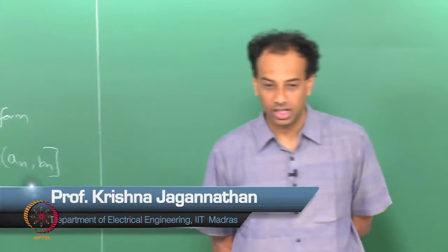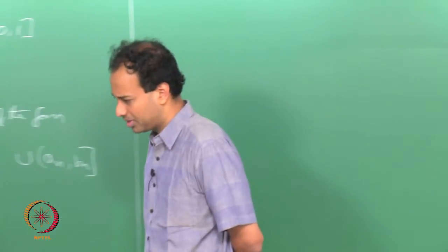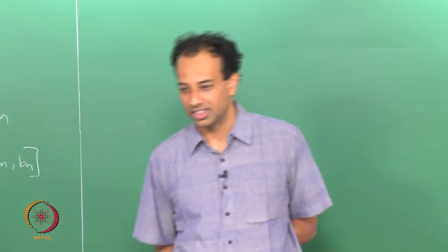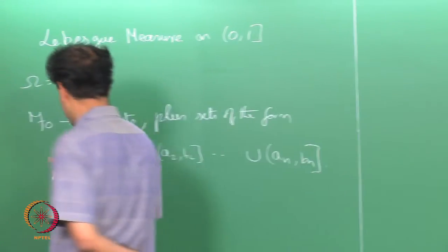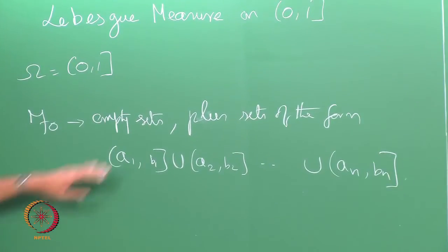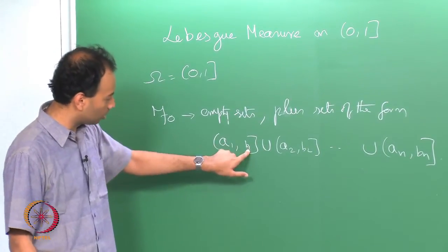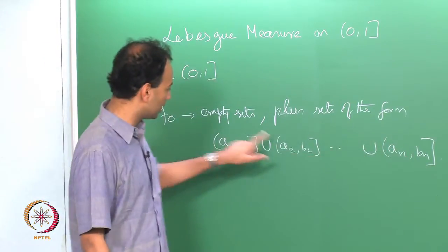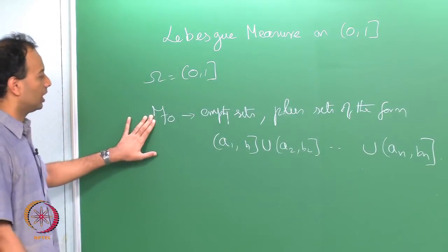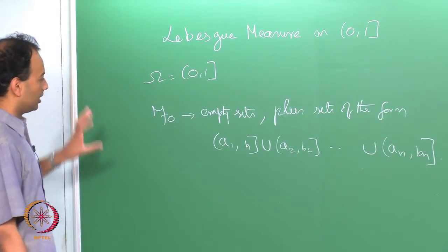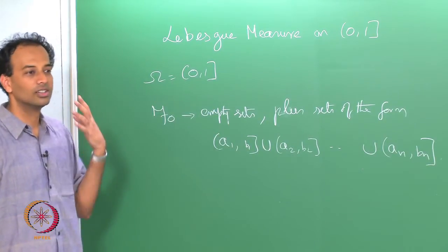Last class we were discussing the Borel sigma algebra on [0,1] and building towards defining the Lebesgue measure or uniform measure on [0,1]. The Lebesgue measure tries to formalize the notion of length. We took this collection F_naught of subsets of [0,1] which includes the empty set and sets of the form (a_1, b_1] — finite unions of disjoint such sets. F_naught is an algebra but not a sigma algebra, and the smallest sigma algebra containing F_naught is in fact the Borel sigma algebra.